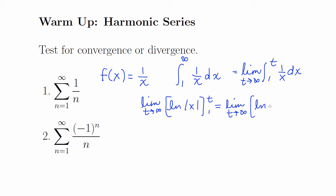That's the limit of ln absolute value of t minus ln of 1. The natural log of 1 is 0, so we have the limit of natural log of t as t approaches infinity, which is infinity.